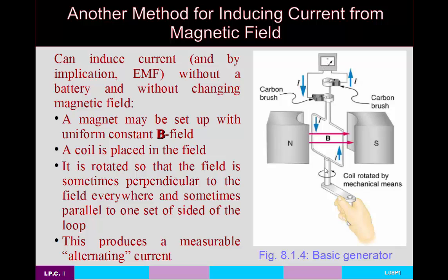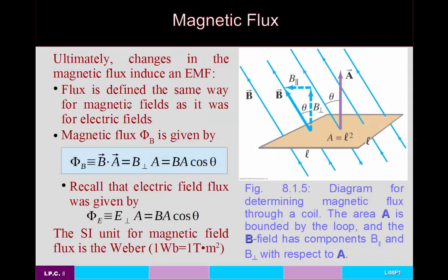This, by the way, is the basis for making an AC generator. We've talked about DC motors previously — that is, converting electrical energy into something that can do mechanical work. A generator does the opposite: it goes from having mechanical work to producing electrical energy.